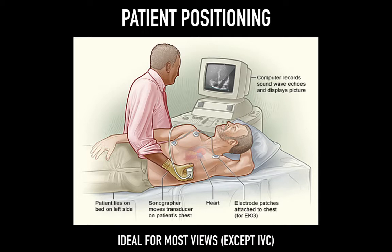Patient positioning is key. In the echo lab, technologists have the luxury of putting patients in left lateral decubitus. This brings the heart close to the chest wall and maximizes the contact for imaging. Echo lab beds have a dropout section that allows the technologist to swing the probe all the way around the chest. In the ICU, we are less lucky. We may get partial left lateral decubitus, but even this can sometimes help. In many cases the patient will be supine. Nonetheless, you can still obtain these views with some slight manipulation.